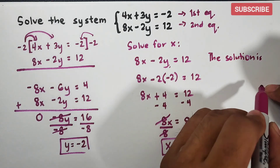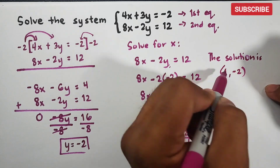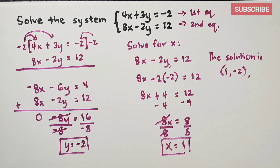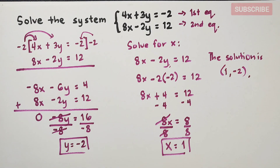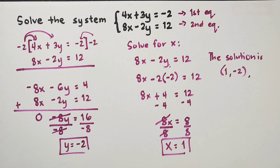The solution is (1, negative 2). I hope you learned something from this video on how to solve systems of linear equations using the elimination method. If you enjoy my channel, don't forget to like and subscribe, and hit the bell button to be updated on our latest uploads. Thank you so much — bye!